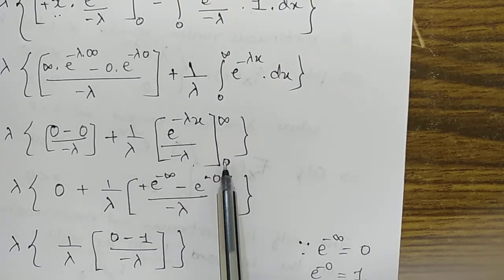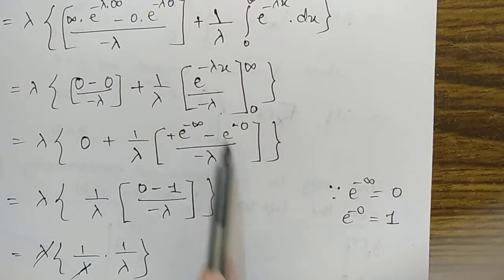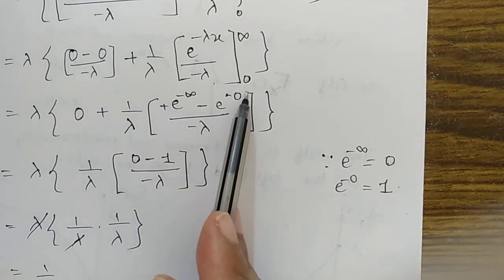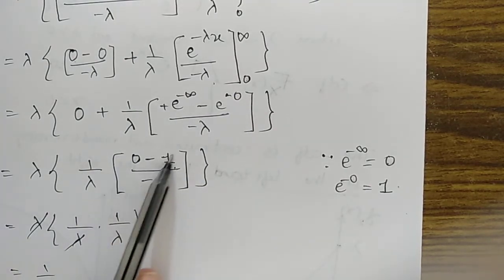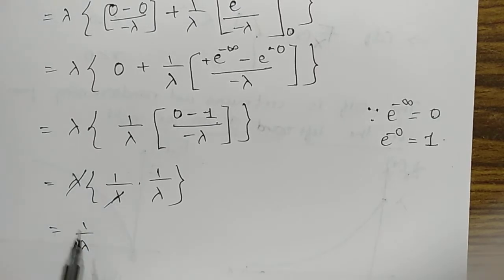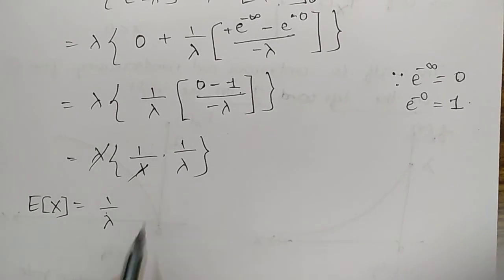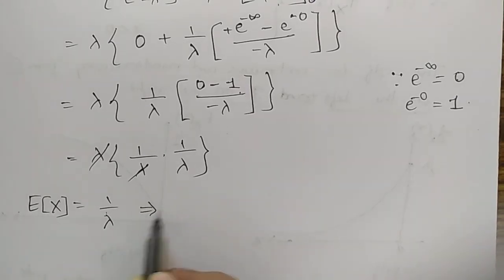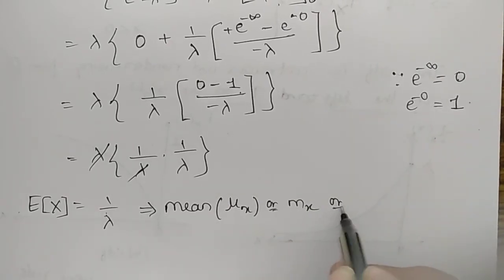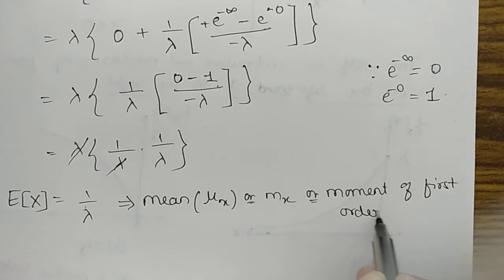Evaluating the remaining integral: ∫₀^∞ e^(−λx) dx = [e^(−λx)/(−λ)]₀^∞. Substituting limits: e^(−∞) = 0 and e^0 = 1, giving (0 − 1)/(−λ) = 1/λ. After cancelling λ, the mean E[X] = 1/λ. This is the first-order moment about the origin, also called μ_x.